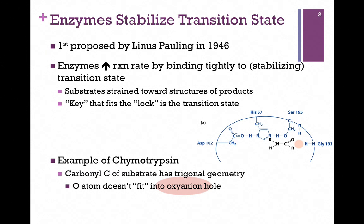Let's look at the example of chymotrypsin. Here we have the catalytic triad in the active site, and here's our peptide with the peptide bond between the nitrogen and carbon being the scissile bond we're going to break. At this point, the enzyme has bound substrate but no reaction has occurred. Notice the carbonyl carbon has trigonal geometry, and in this model of substrate binding we see that the carbonyl oxygen is not close enough to the amine group of this glycine residue to have any contact whatsoever. That peach-colored oval area is referred to as the oxyanion hole, and just notice for now that the oxygen atom is not in any position to make contact with that glycine backbone.